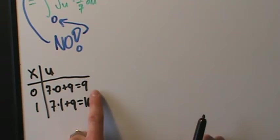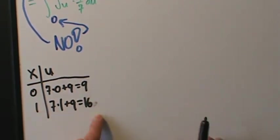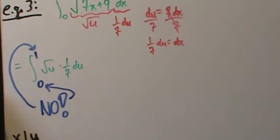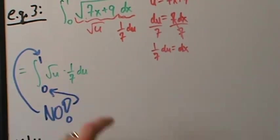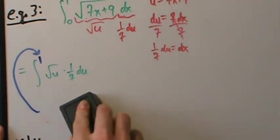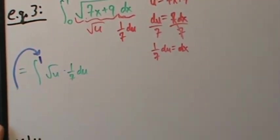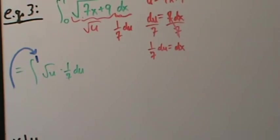When x = 0, u = 9; when x = 1, u = 16. So the limits 0 to 1 on the integral aren't correct for our u-integral — the actual limits are 9 to 16, which is what we found with the chart.